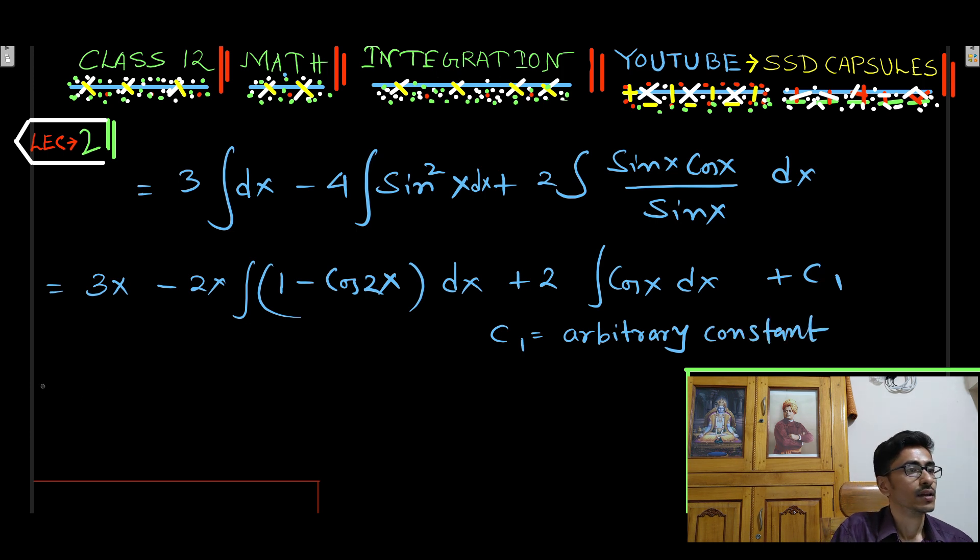So here 3x. Here also we have used 2 sin squared x means 1 minus cos 2x. In that step we have used this formula.